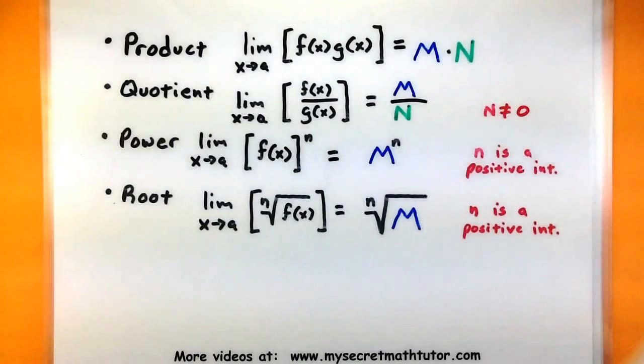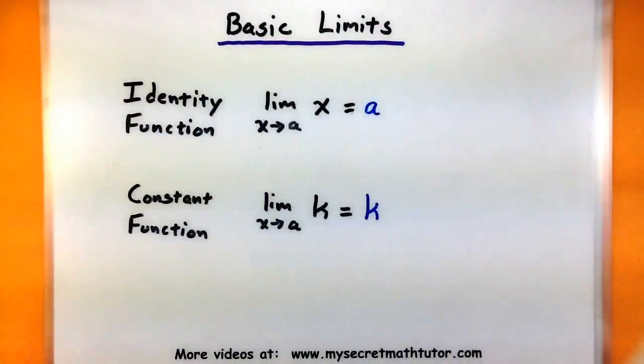Now, you may be worried at this point saying, okay, that's great, but I still have to figure out what the limit of, say, f and g are. And how could we go about doing that? This basically gives us a way to break stuff up, but not necessarily find the limit of those individual pieces. Well, there are a couple of basic limits that you can add to these laws that will allow you to solve a few problems. And these are the limits of an identity function and the limits of a constant function.